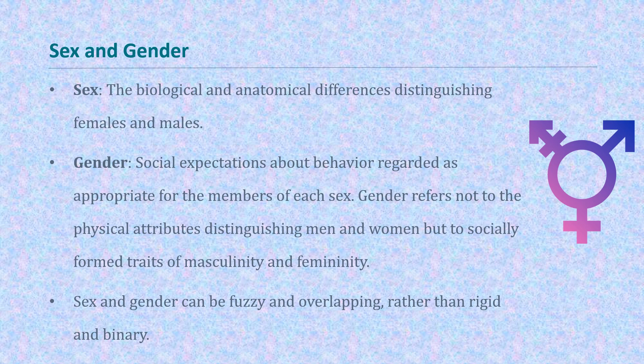Sex and Gender. Sex is the biological and anatomical differences distinguishing males from females, while gender refers to the social expectations about behavior regarded as appropriate for the members of each sex. Gender refers not to the physical attributes distinguishing men and women, but to socially formed traits of masculinity and femininity.